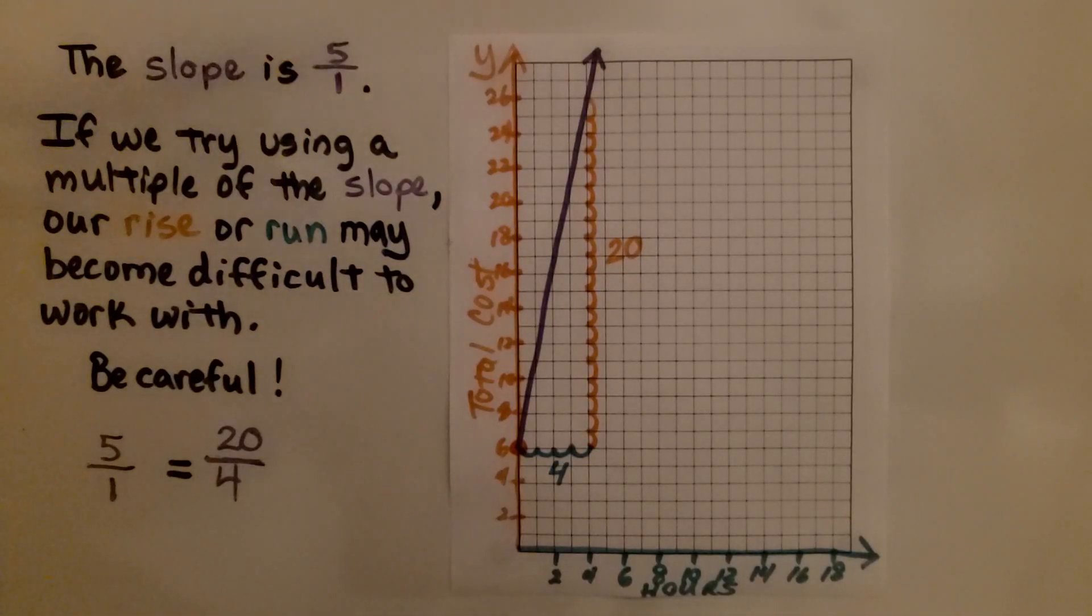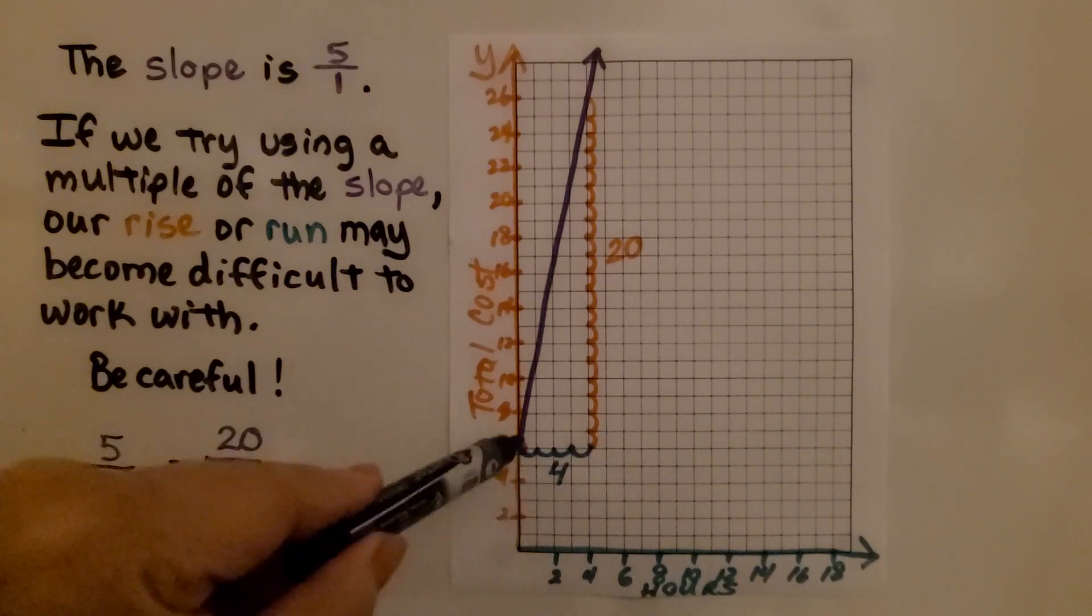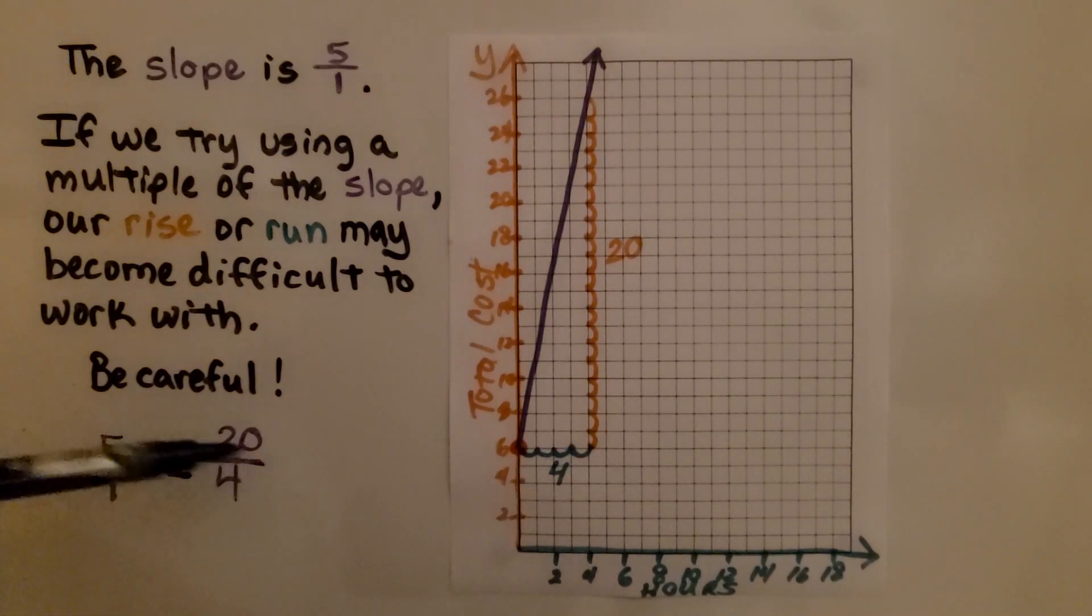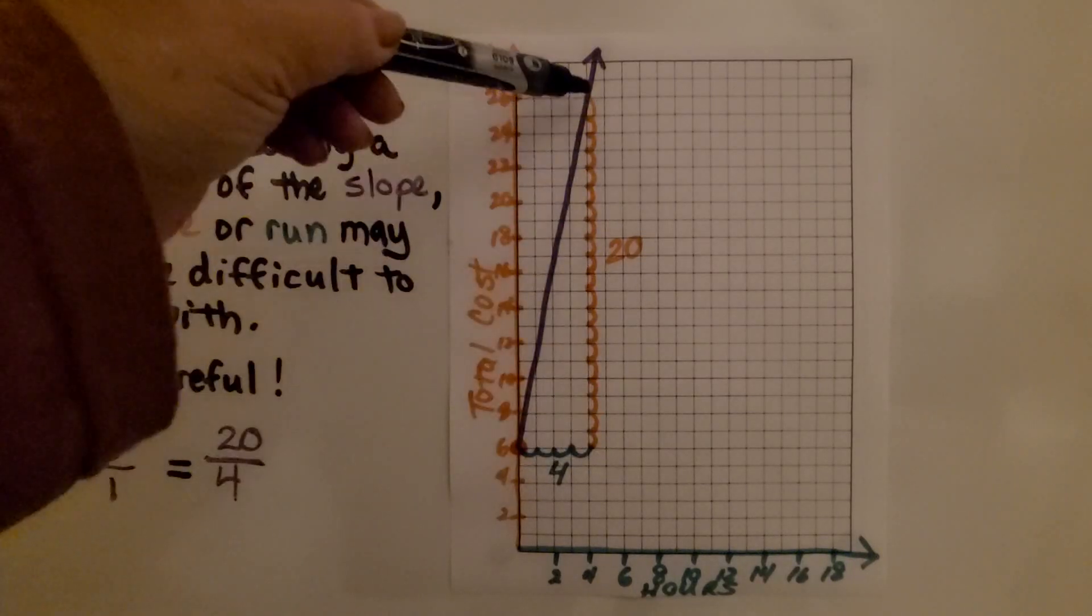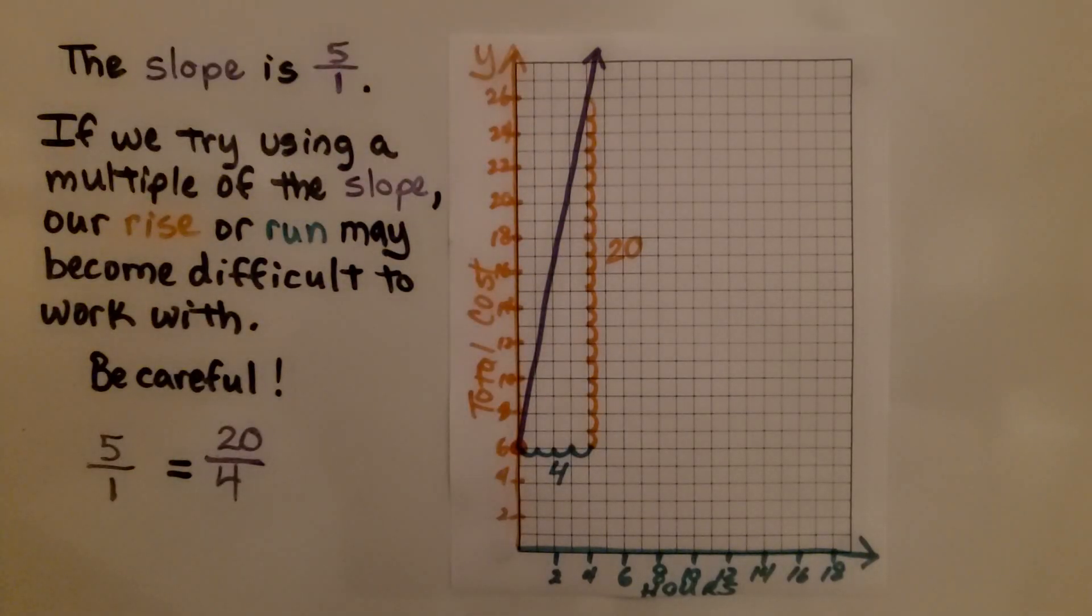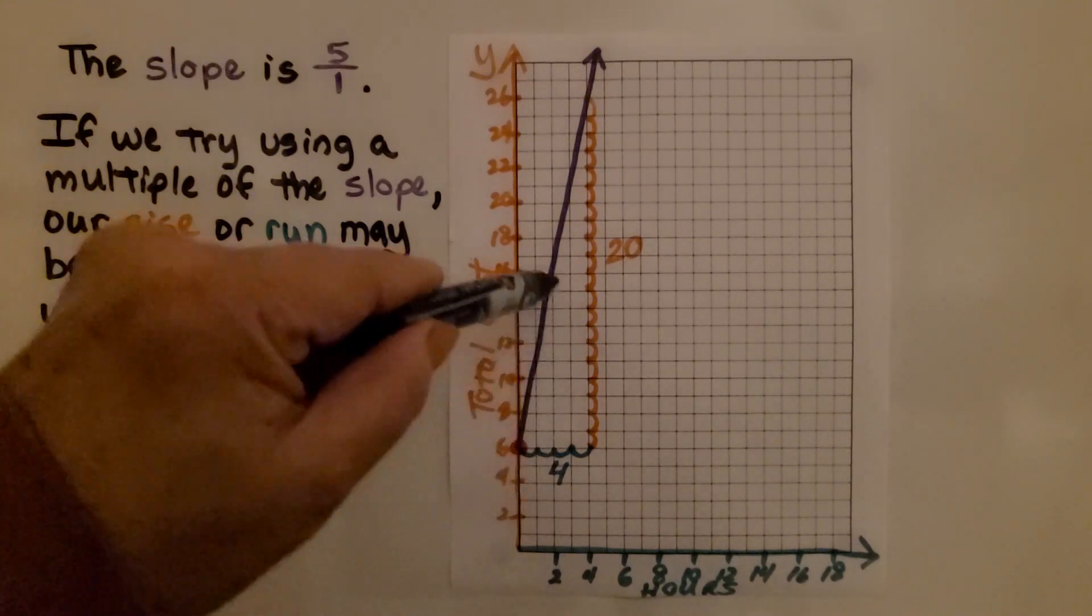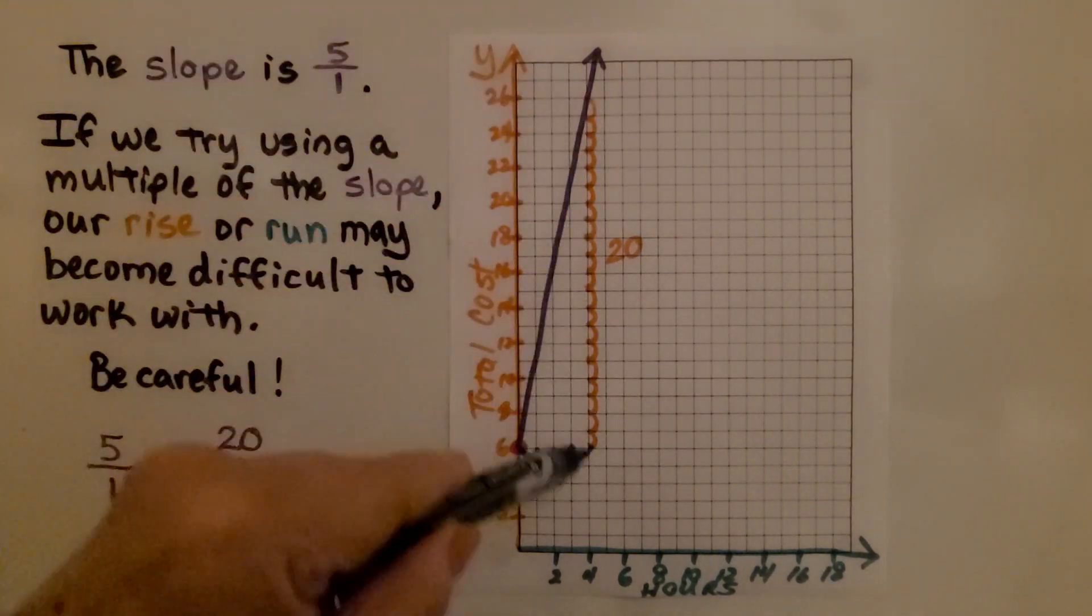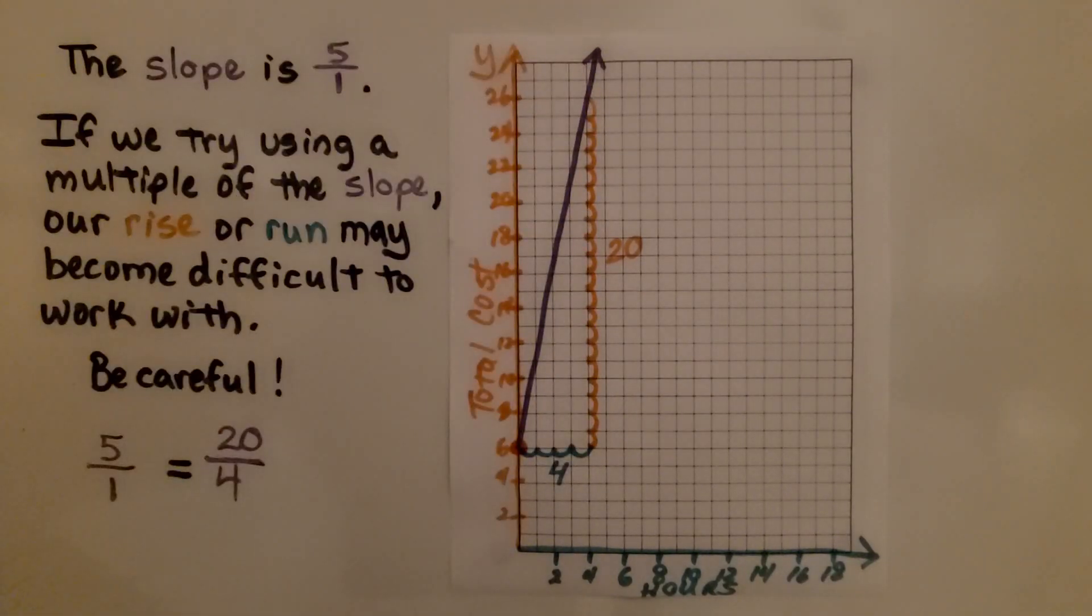The slope is 5 over 1, written as a fraction. Now if we try using a multiple of the slope, like we did in the other problem, our rise and run may become difficult to work with. If we want to have a run of 4, so that we have more room, that means our rise is going to be 20, and that is going to be very difficult to work with. It might be better to work with the 5 over 1, or maybe 10 over 2, so that we're not counting a huge rise going up.